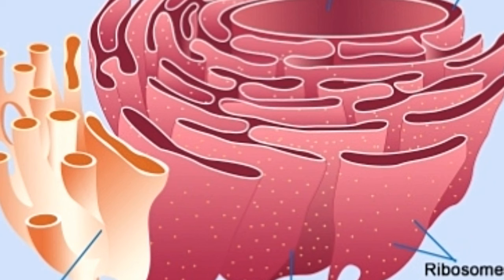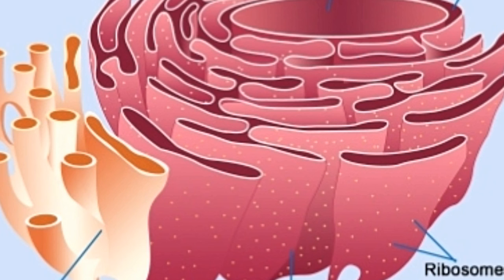One of the most important functions of smooth endoplasmic reticulum CER is to detoxify the body from metabolic wastes and drugs. Drug detoxification, as well as detoxification of wastes generated in metabolic processes, takes place in CER present in the liver cells. It contains enzymes that catalyze reactions that can make lipid-soluble drugs and metabolic wastes water-soluble, so that they can be easily expelled from the body. When a large amount of drugs or alcohol enters the circulatory system, the production of detoxification enzymes is increased by the liver cells. To perform the function of detoxification, smooth endoplasmic reticulum CER doubles its surface area.